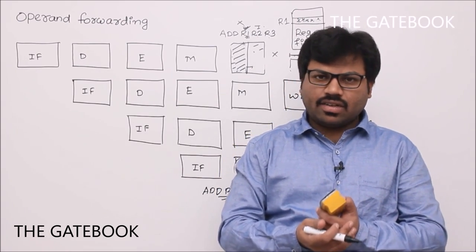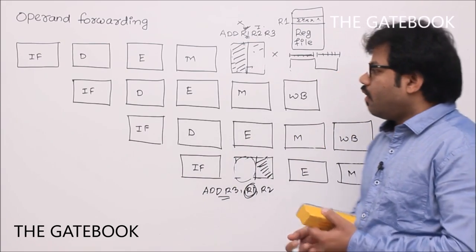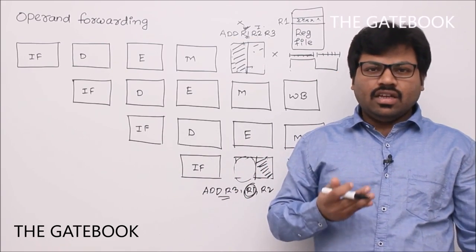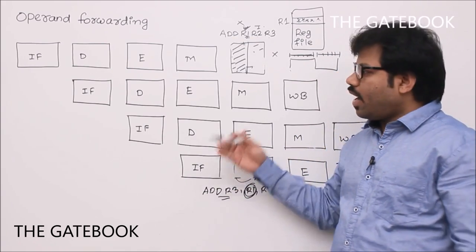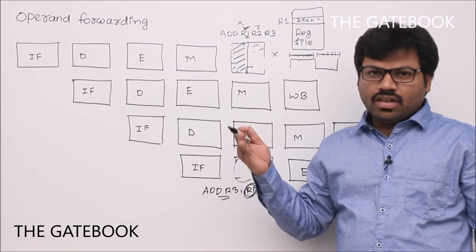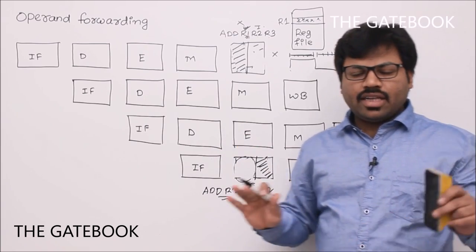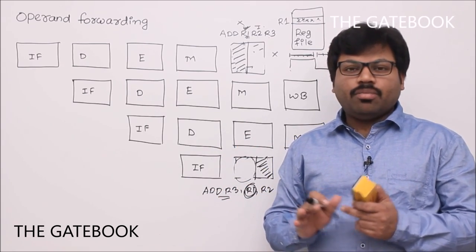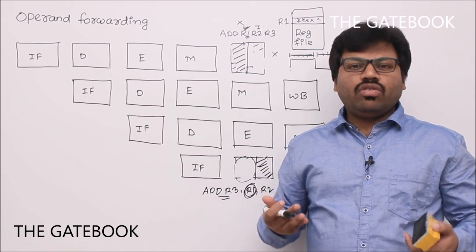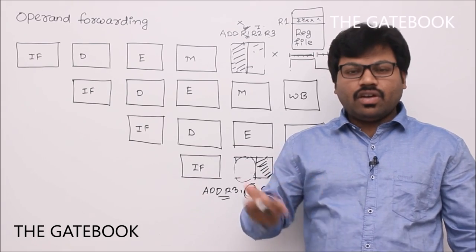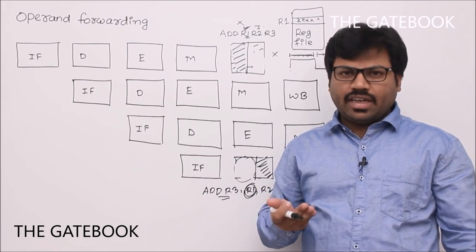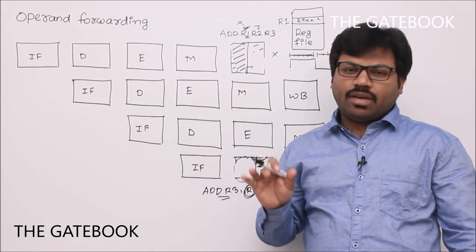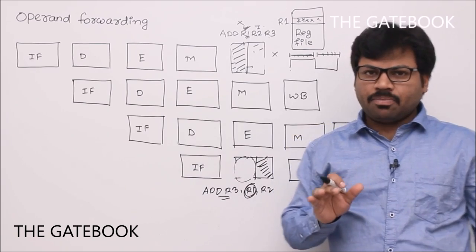So whenever write-back stage and decode stage overlap, there is no problem as long as writing is done in the first half and reading in the second half. That is one architectural trick. This is one important detail you should learn to solve GATE problems clearly.